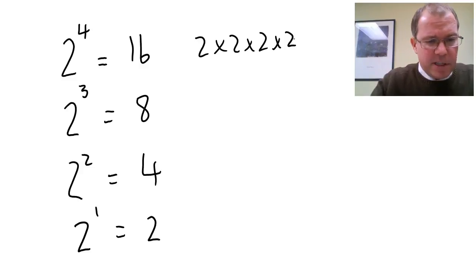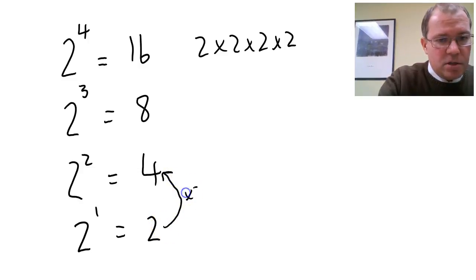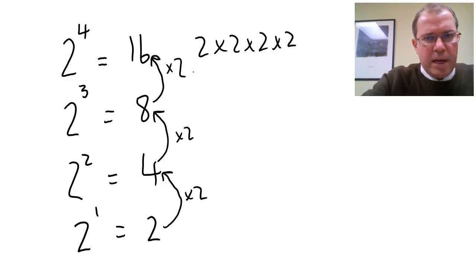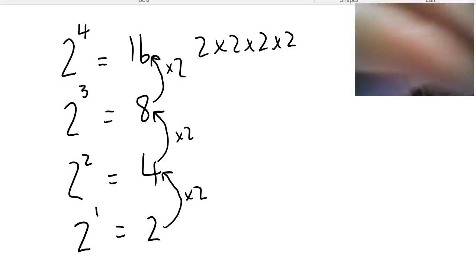Now if you think about it, what's happening is every time you start with 1 power and you go one way, you're multiplying by 2. 4 times 2 is 8, and 8 times 2 is 16.